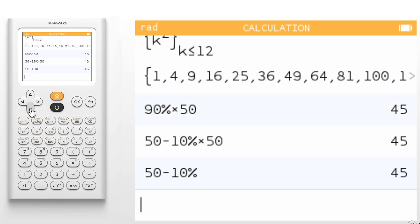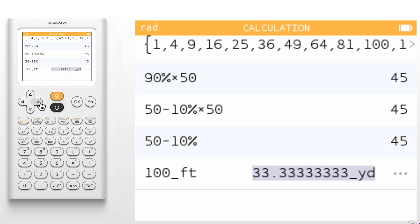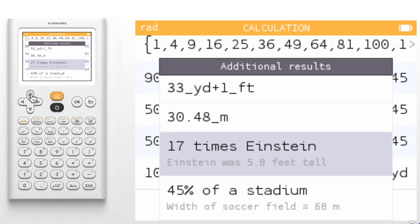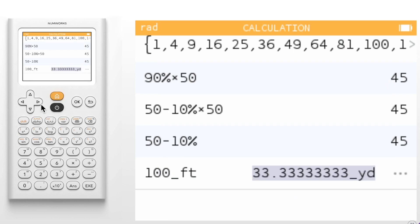When working with units, additional results now provide two reference values, one larger and one smaller. For example, if we have a result of 100 feet, and we open the additional results, we learn that 100 feet is 45% of the width of a soccer stadium, and 17 times the height of Einstein. These reference values can be found for all types of units.